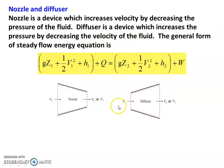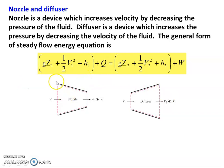A diffuser is a device which increases the pressure by decreasing the velocity of the fluid — it is the opposite of a nozzle. Velocity decreases and pressure increases. Now we apply the Steady Flow Energy Equation to the nozzle. The general equation is: gZ1 + (1/2)V1² + H1 + Q = gZ2 + (1/2)V2² + H2 + W.